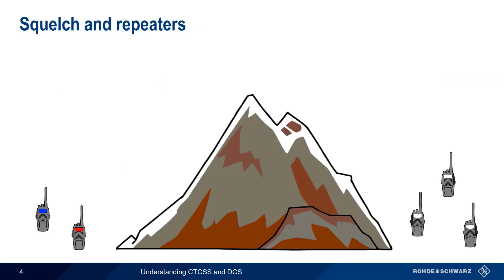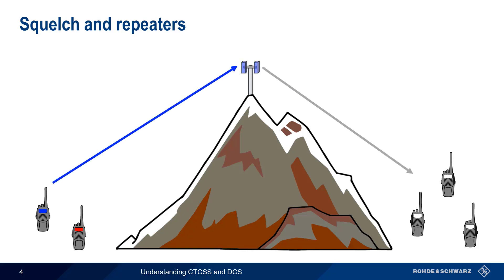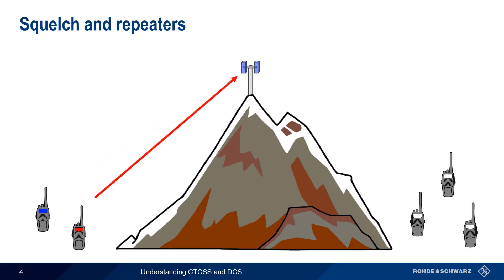Repeaters are often configured to only retransmit signals that are received with a given squelch tone or code. For example, if this repeater is configured with the blue tone or code, then transmissions received from radios using that same tone or code will be repeated, whereas noise or transmissions from radios using other tones or codes would not be repeated. Repeaters don't normally pass tones, but a repeater may insert the same tone, a different tone, or no tone at all into the repeated signal.